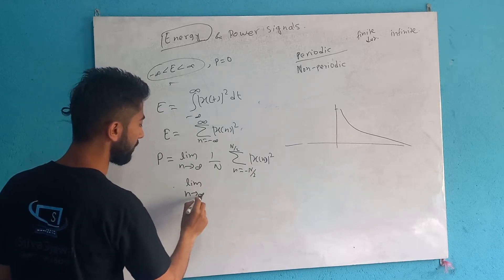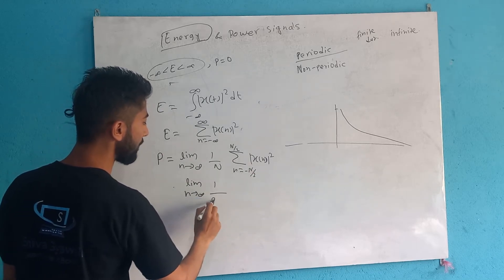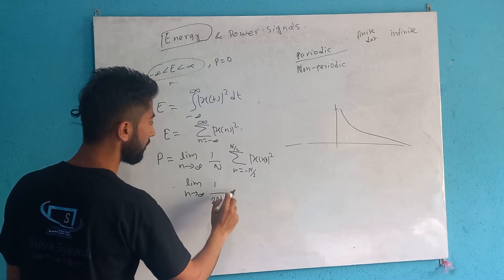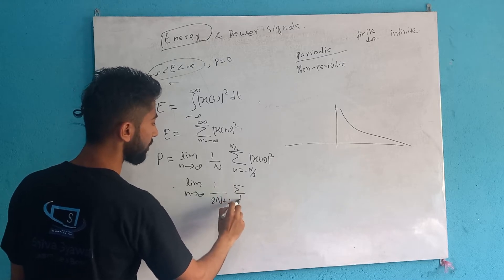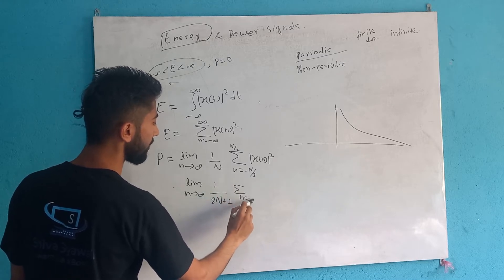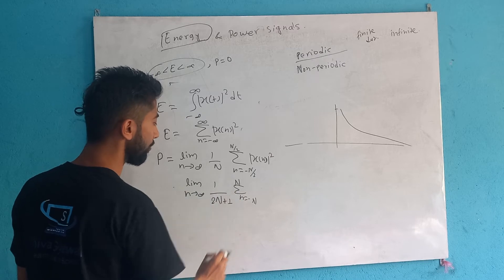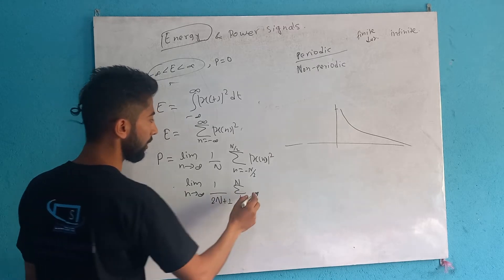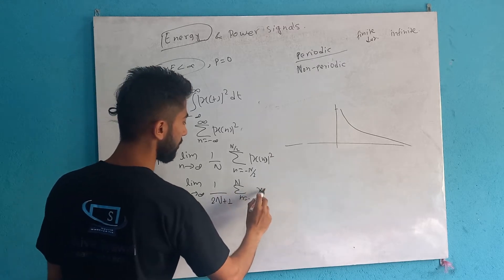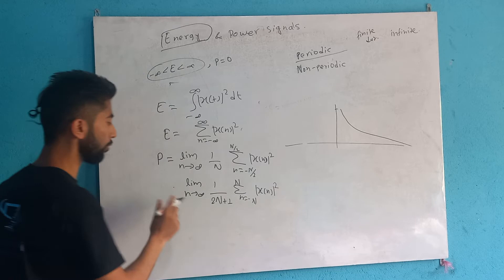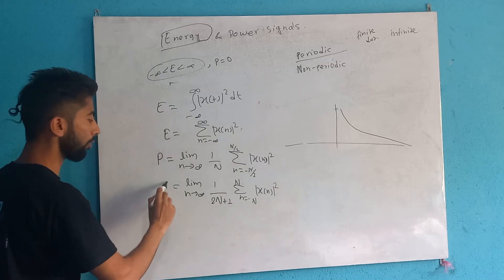N equals infinity: 1 over 2N plus 1, summation from n equals minus N to N of x[n] magnitude squared. So this is the power formula.